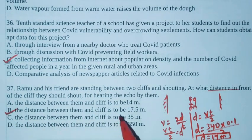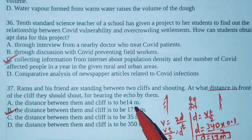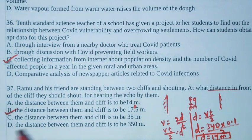So 17 meter, nearest one is 17 meter. Option B is the right answer. The distance between them and the cliff is to be 17.5 meter. This is 17.05 so option B is the right answer. At least 17 meter distance to hear the echo sound.